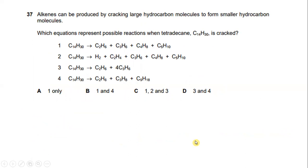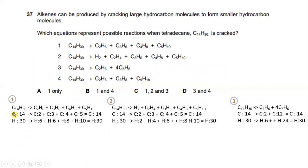Alkenes can be produced by cracking large hydrocarbon molecules to form smaller hydrocarbon molecules. Which equation represents a possible reaction when tetradecane C14H30 is cracked? Looking at C14H30: option 1 gives C2H6 + C3H6 + C4H8 + C5H10, where carbon totals 14 and hydrogen totals 30. Options 2 and 3 also give carbon 14 and hydrogen 30. So options 1, 2 and 3 are correct, and the answer is C.